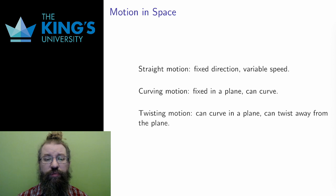I can think of three types of movement in three-dimensional space. Straight motion, fixed direction along a fixed line but at variable speed. Curving motion, restricted to some fixed plane but curving and changing direction in that plane.